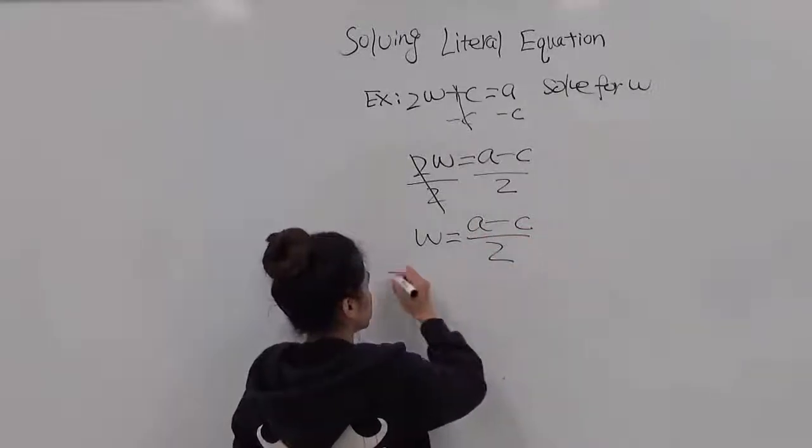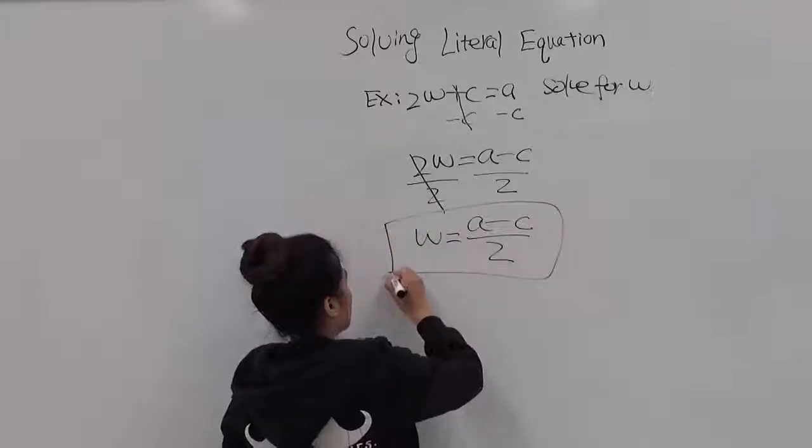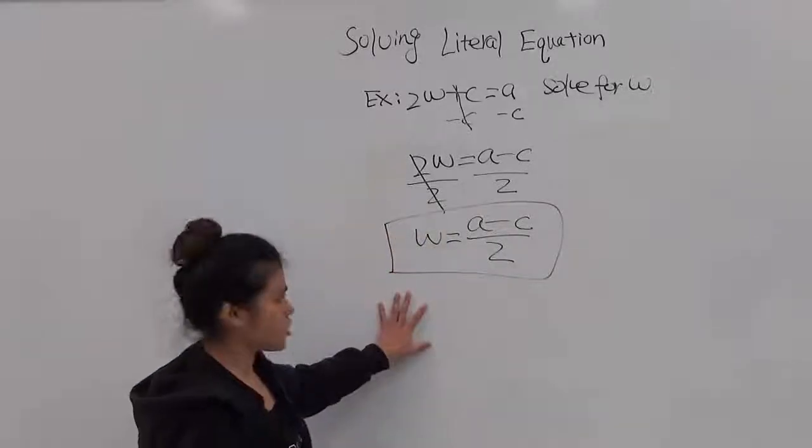Then divide both sides by 2. So w equals a minus c divided by 2. And this is the answer. Thank you.